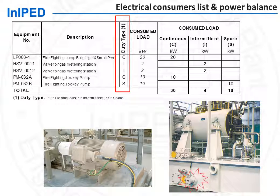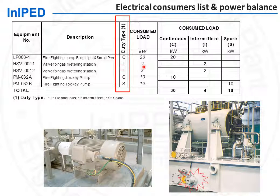The overall power consumption is then calculated by summing the consumed load times what is called a coincidence factor, which will be 1 for continuous consumers, maybe 0.5 or 0.6 for intermittent consumers, and 0.1 for spare consumers. Indeed, for spare consumers, it is still required to consider some power being consumed when this consumer is started while the other one is not yet stopped.